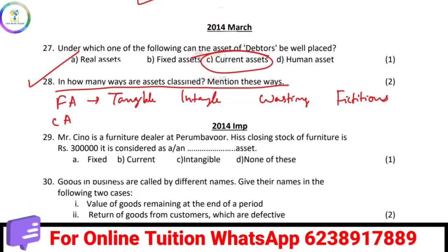In the 2014 improvement exam: Mr. Sino is a furniture dealer at Perimbaur. His closing stock of furniture is 3 lakh. What is the closing stock? What is the asset — fixed, current, or intangible? The answer is current asset, because its useful life is within one year.